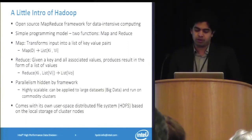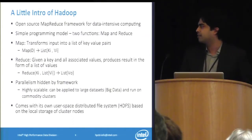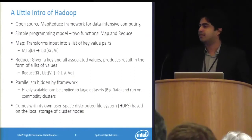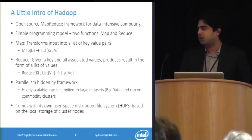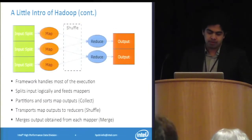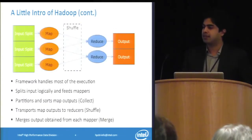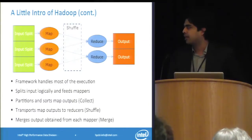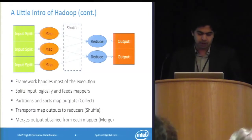Hadoop comes with its own user-space file system called Hadoop Distributed File System (HDFS). It's essentially a layer on top of the local disks of each node. One of the advantages of Hadoop is that most companies run it on commodity clusters — really low-cost, low-end hardware.